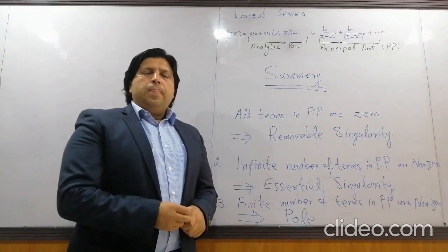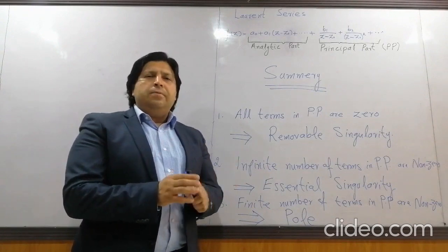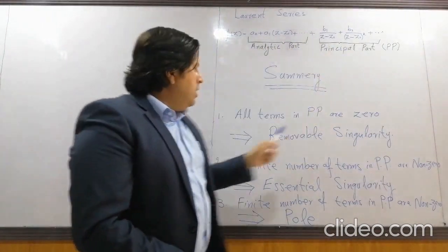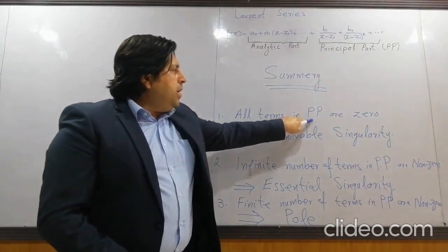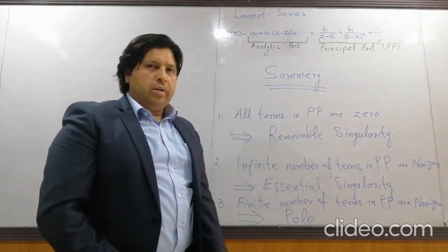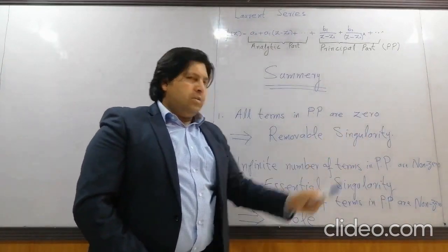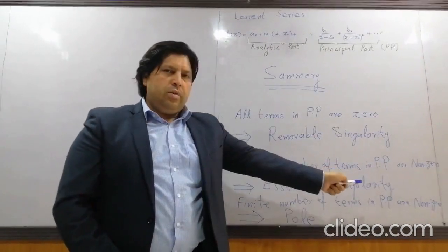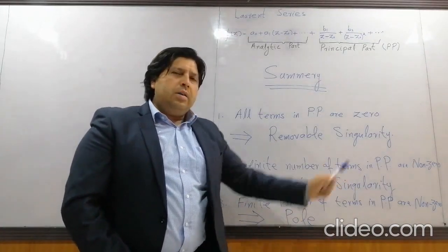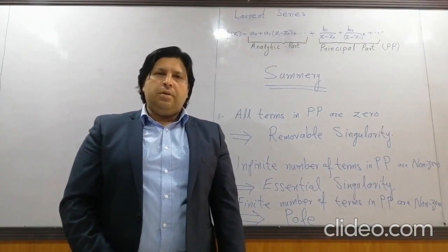Now let us see the summary. First, represent the function f(z) in the Laurent series. Then: if all terms in the principal part are zero, this is a removable singularity; if infinitely many terms in the principal part are non-zero, this is an essential singularity; if a finite number of terms in the principal part are non-zero, this is called a pole. So till the next lecture, Allah hafiz. As-salamu alaykum.